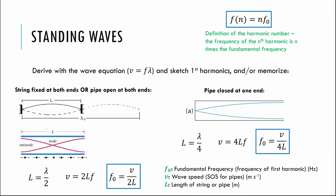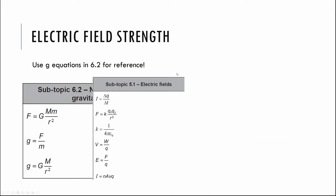For electric field strength, the data booklet is inconsistent. In topic 6.2, Newton's law of gravitation gives you a nice combination: the gravitational force F = GMm/r², and gravitational field strength g = F/m. Substituting, the little m cancels and you get g = GM/r² — the gravitational field strength at distance r from mass M. The data booklet shows this derivation but doesn't give you the corresponding result for Coulomb's law.